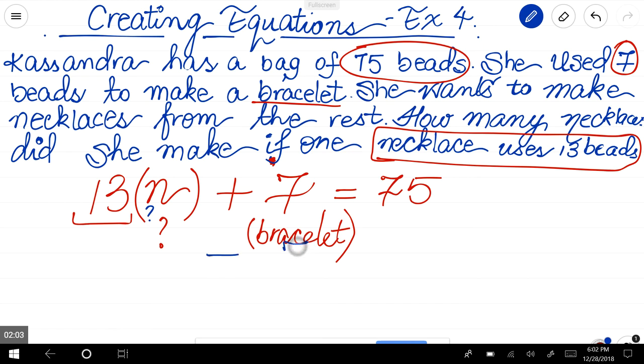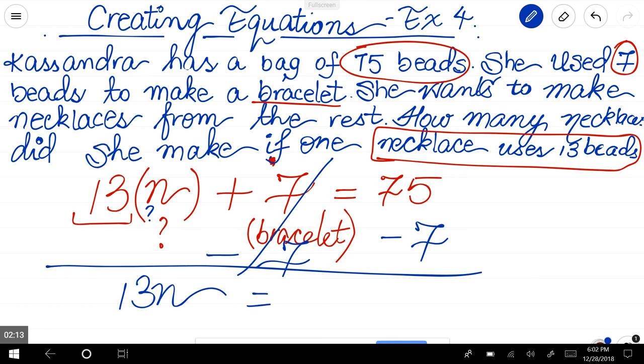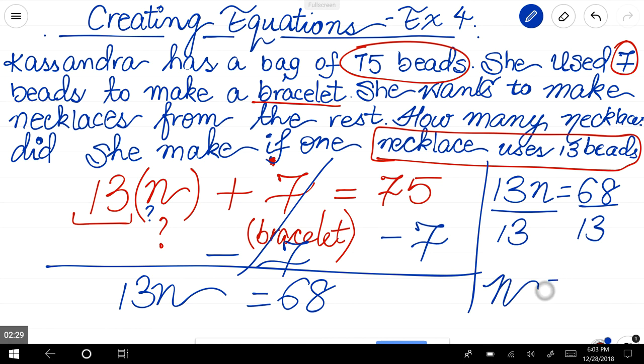I have to get rid of seven, so I subtract seven from both sides. Gone from here. 13n equals 75 minus seven, which is 68. So 13n equals 68. N is still attached, so we will divide by 13 on both sides. That gives us n equal to 5.23.